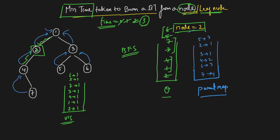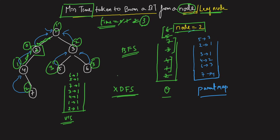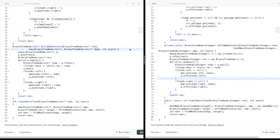Why BFS and not DFS? The tree burns simultaneously from the source node — at time 0, time 1, time 2, time 3 — level by level. This is inherently level-wise movement: level 0, then level 1, level 2, level 3. DFS would not handle this simultaneous radial spreading correctly, which is why we use BFS.